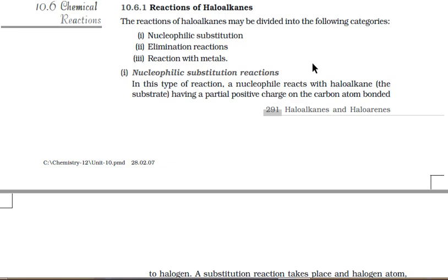Welcome back students. In our previous lectures we discussed classification of alkyl and aryl halides, methods of preparation, nature of the C-X carbon-halogen bond, physical properties, and optical isomers. Today we are going to start our first topic: the chemical reactions of alkyl and aryl halides, also known as reactions of haloalkanes and haloarenes.